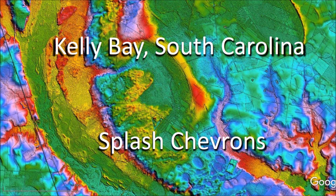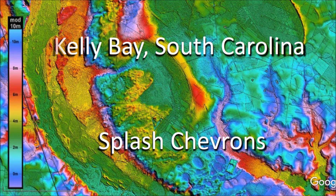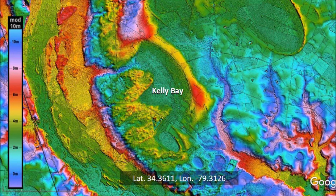Many Carolina Bays near rivers show evidence of mud splashes that formed contemporaneously with the bays. Today, we will study Kelly Bay in South Carolina. Welcome to another edition of the Carolina Bay of the Day, where we study the secondary impacts made by the glacier ice boulders that were ejected by an extraterrestrial impact on the Laurentide Ice Sheet. There is a link to the LiDAR visualization tool for Google Earth by Michael Davias in the description of the video.